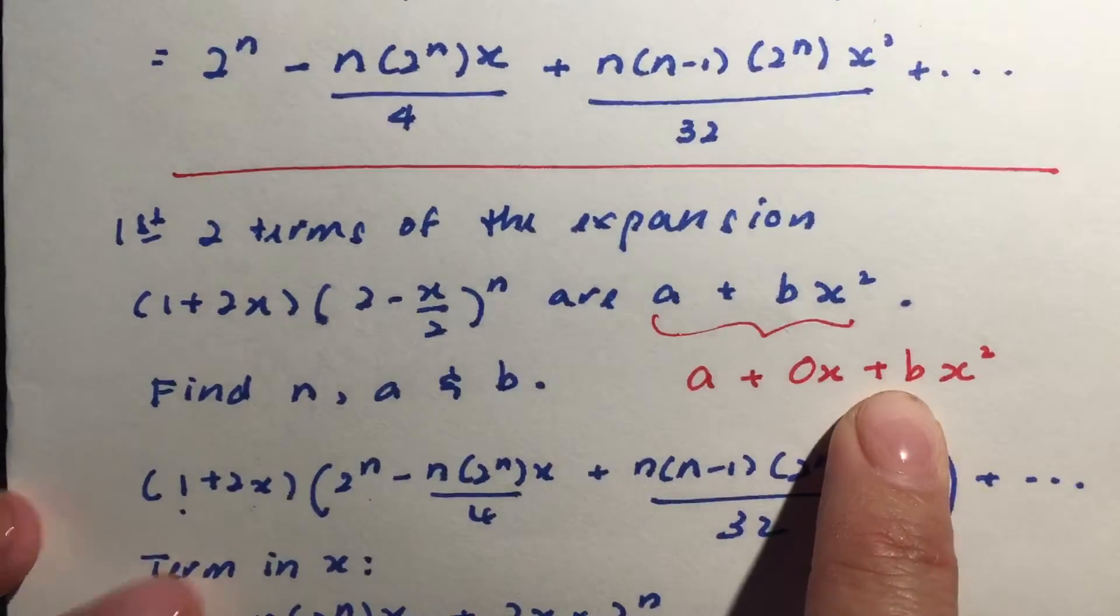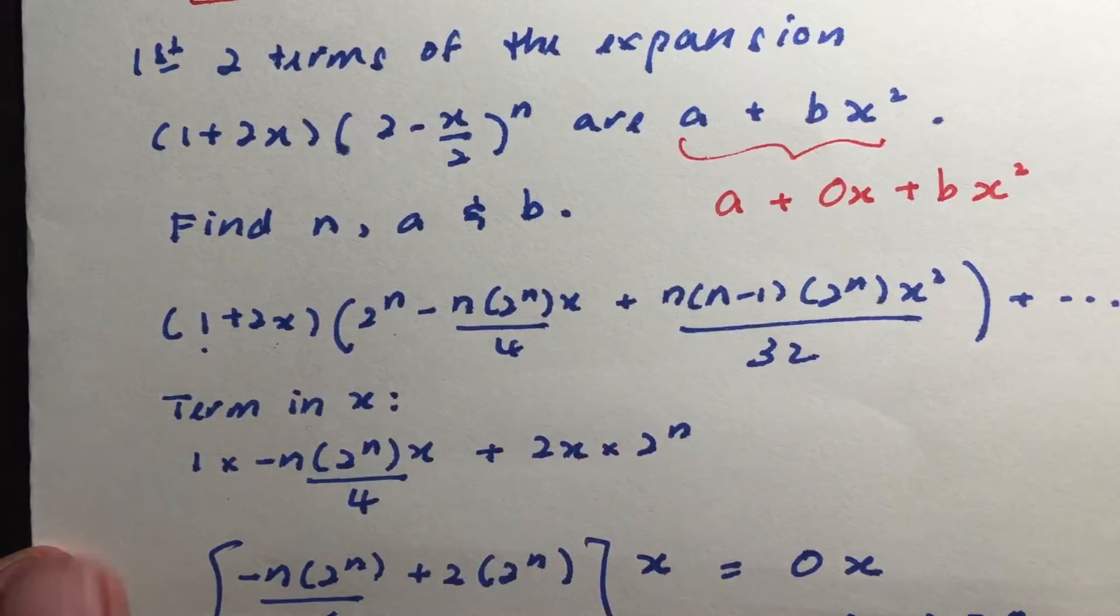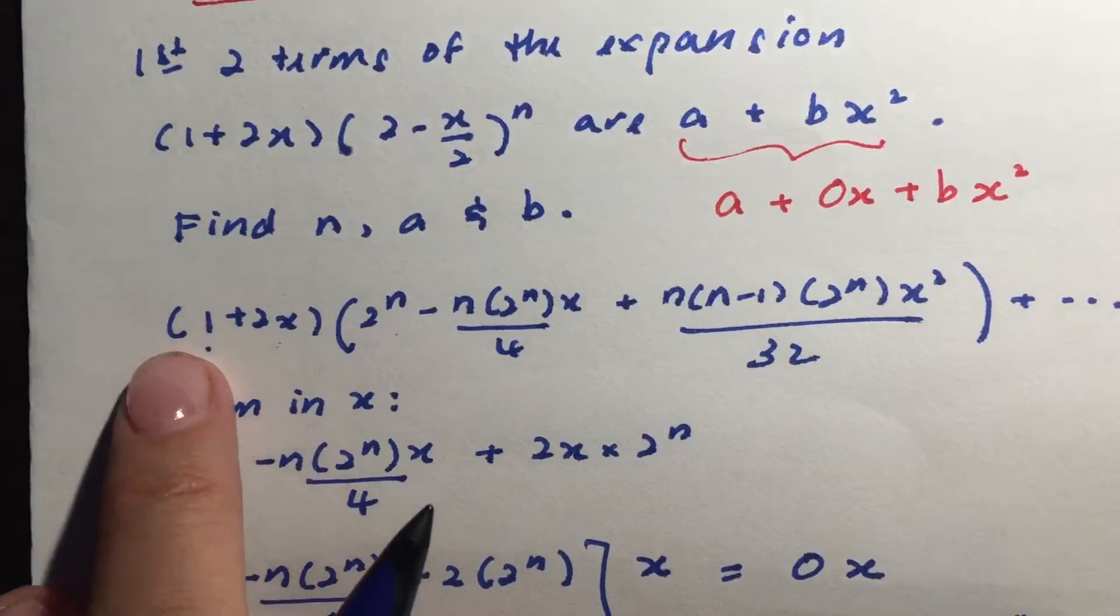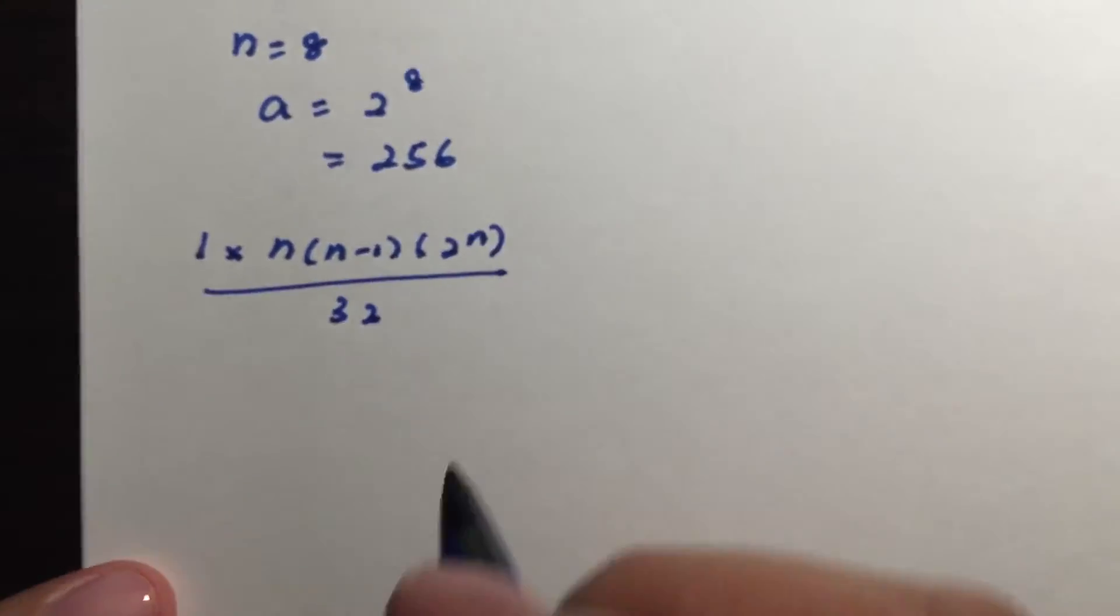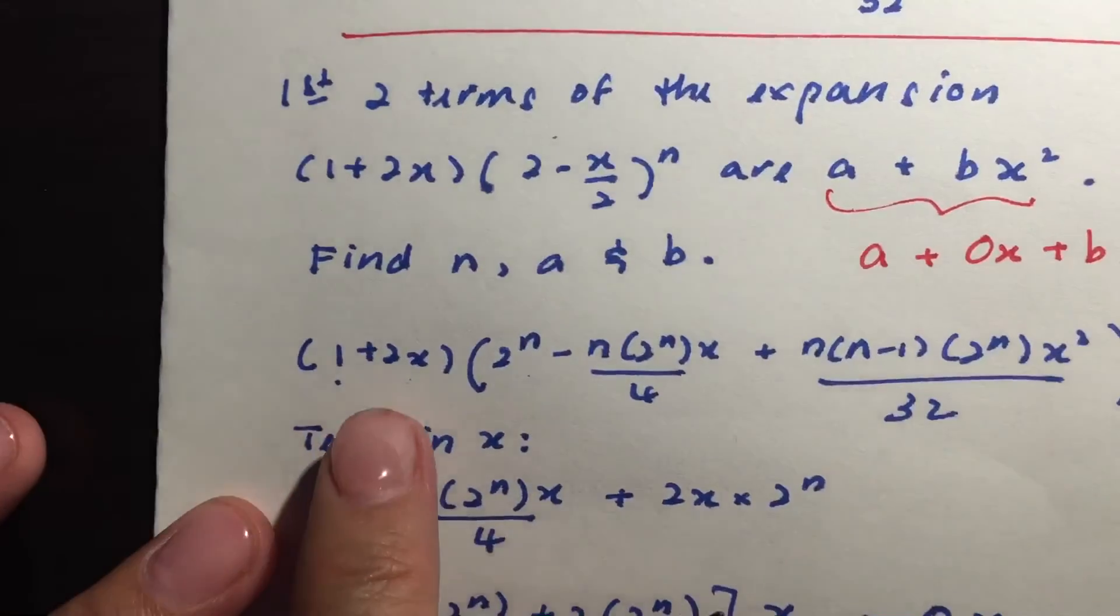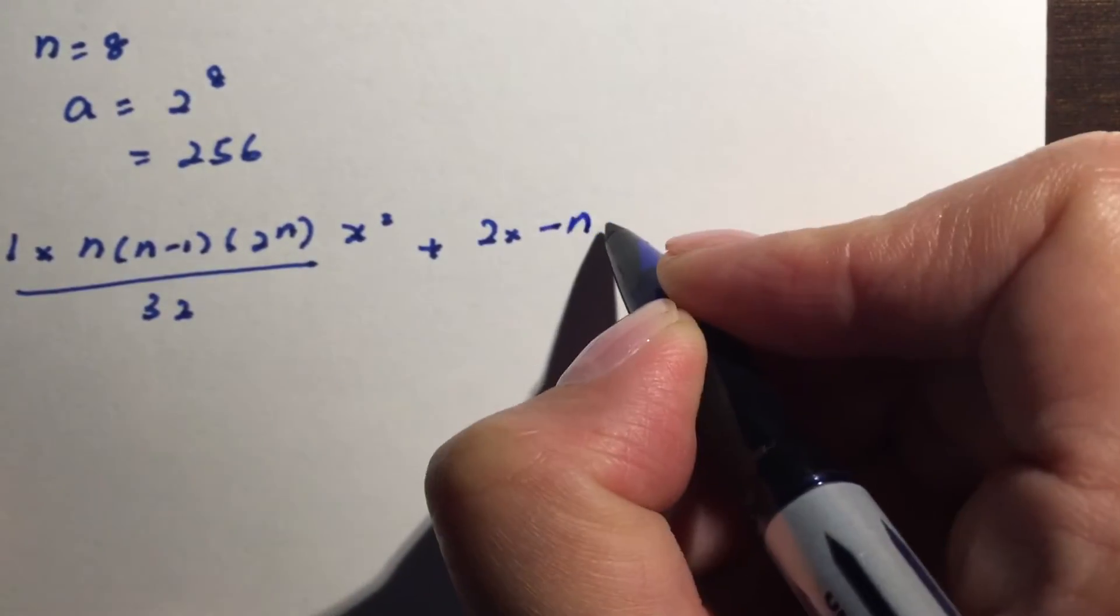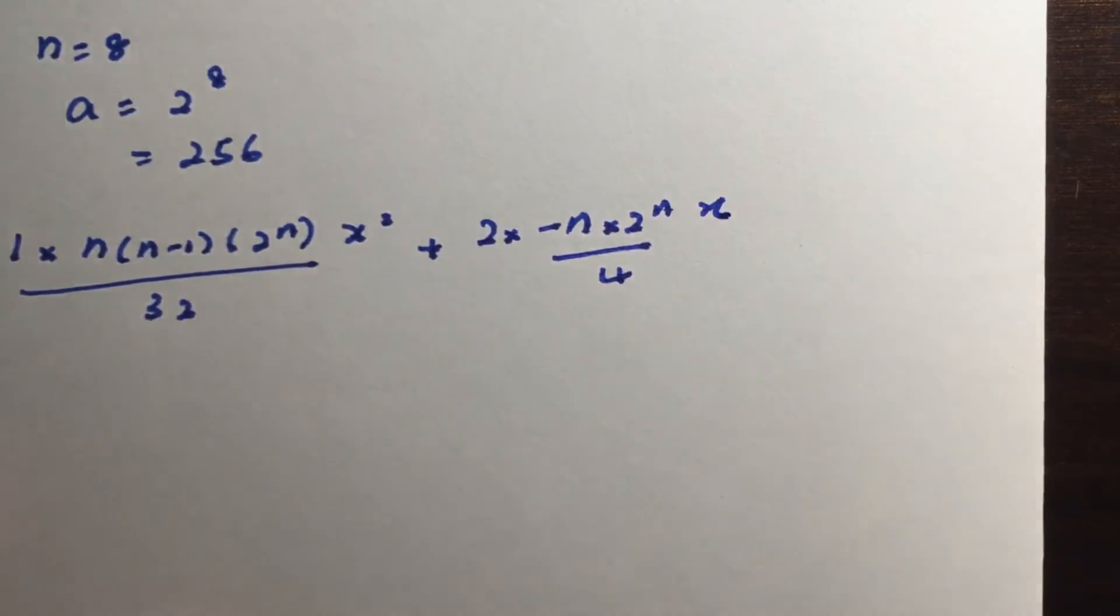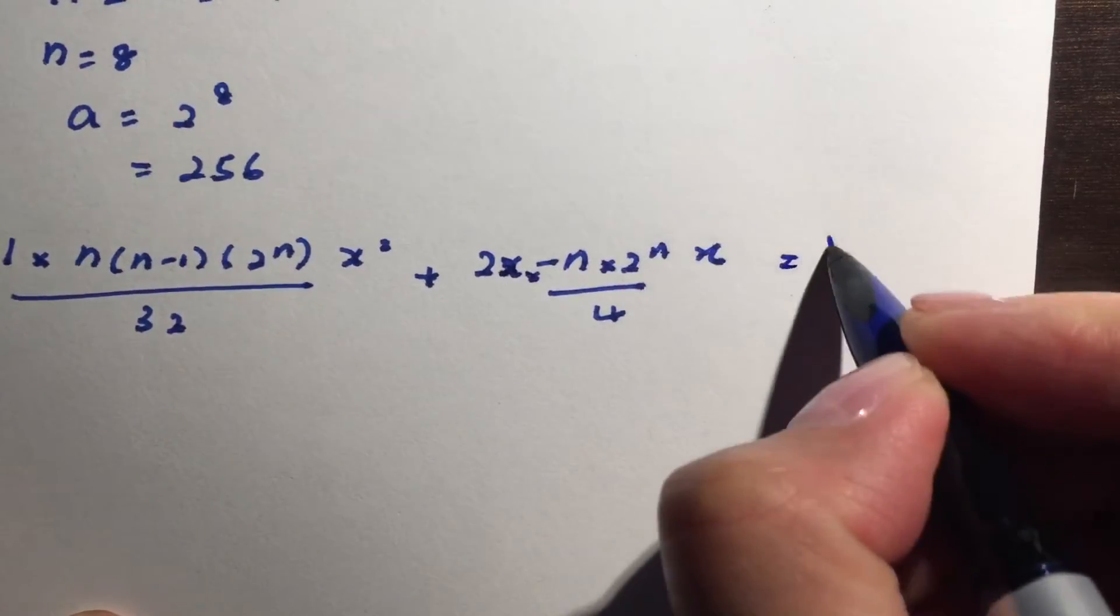So now, b is the coefficient of x squared. So in order for you to be able to get the x squared term, you will have to multiply x with x or constant with x squared. So let's have the constant with x squared first. So this is what we will have. So we will have 1 times n n minus 1 2 to power n over 32 x squared. So this is constant with the x squared term plus. So now we have the x and the x term. So we will have 2 times negative n times 2 to the power of n over 4 x. Sorry, it's 2x. So this one should have been 2x times this. So this will give me bx squared.